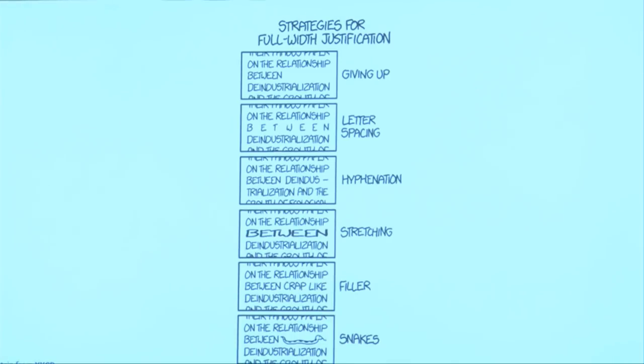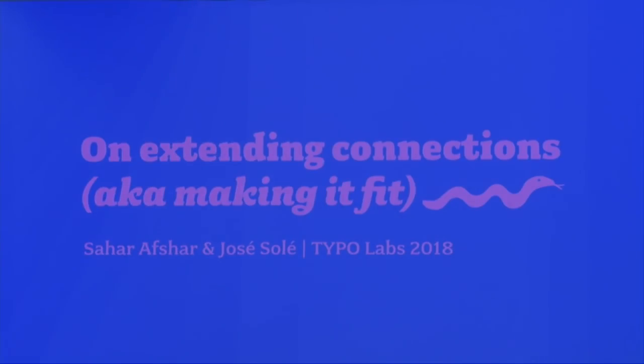We wanted to talk about it here because it's an ongoing project and we still have some issues that need resolving, so we'd be happy to hear any ideas and comments from you lovely people in the audience. Justification can get really complicated really fast. We wanted to show that there are various different approaches to deal with justification — in Latin you can use letter spacing, hyphenation, or stretching. And if everything else fails, you can just go for snakes. Sahar is now going to explain how this all works for the Arabic script.